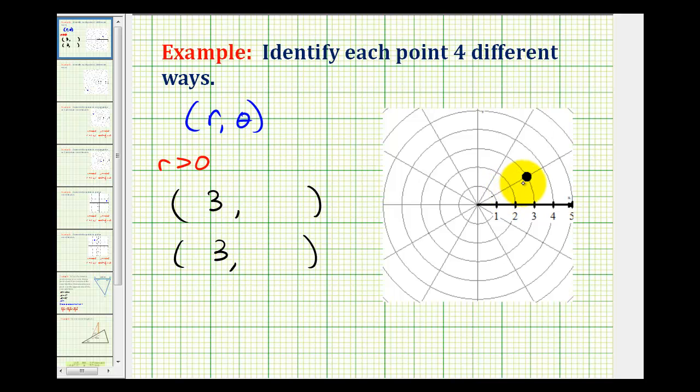And because r is positive, theta must be an angle where its terminal side would pass through this point. Theta could be any angle in standard position where this would be the terminal side of the angle.